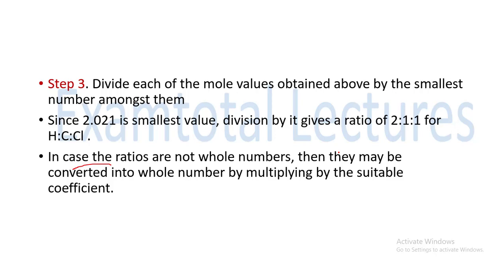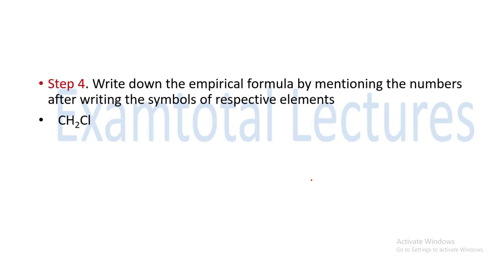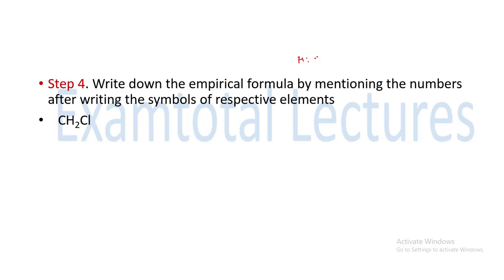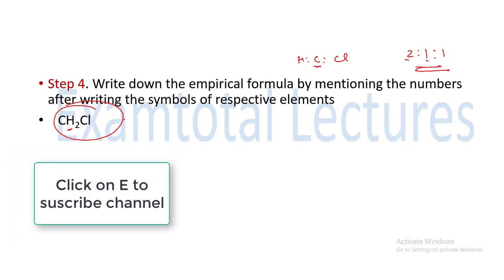We can convert these to whole numbers by multiplying a suitable coefficient. Step 4: write the empirical formula. The ratio of hydrogen to carbon to chlorine is 2:1:1. So the empirical formula is CH₂Cl — 1 carbon, 2 hydrogen, and 1 chlorine. This is the simplest whole number ratio, and we have got the empirical formula of our given compound.